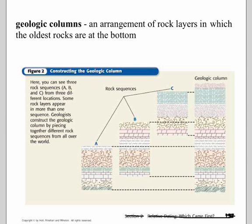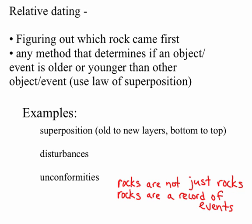A geologic column is an arrangement of rock layers in which the oldest rocks are at the bottom. You can think of big core samples or road cuts where you see all those stripy rock layers. We can take these from all around the country and match them up like a puzzle to know how different rock layers exist in different parts of the world. Relative dating determines if an object or event is older or younger than another — using the law of superposition to figure out age relative to other layers.